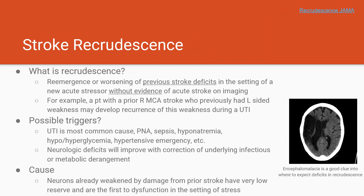One last concept before we move on to stroke workup: stroke recrudescence. Recrudescence is a phenomenon where a patient experiences re-emergence or worsening of previously recovered stroke deficits, typically in the setting of a new acute stressor, with no new evidence of stroke on imaging. For example, a patient with a prior right MCA stroke who previously had left-sided weakness may develop recurrence of that weakness during a UTI. UTI is the most common cause, but recrudescence can be caused by pretty much any severe infection or metabolic or physiologic disturbance.